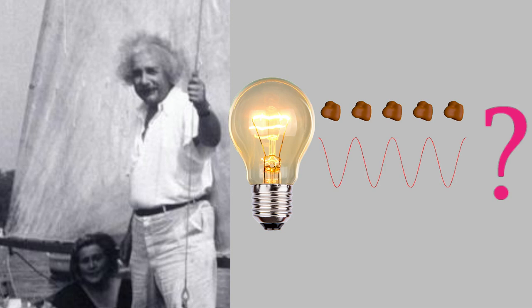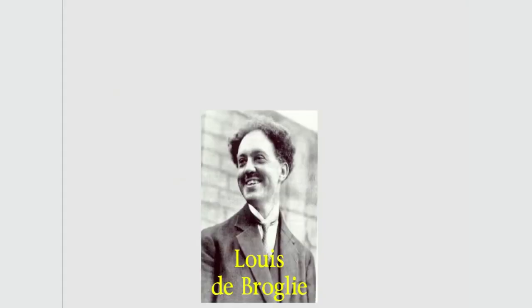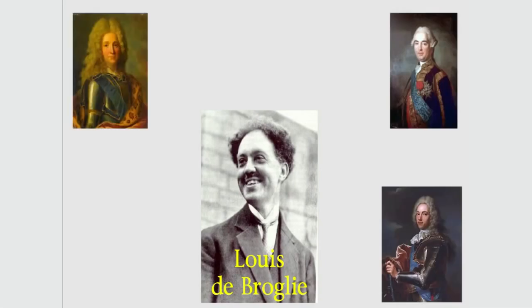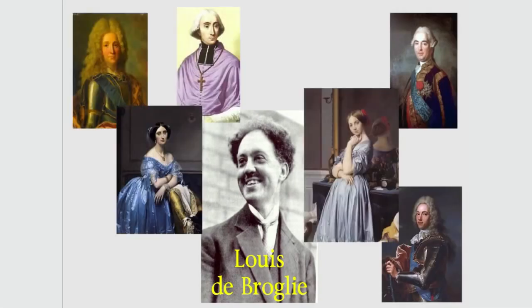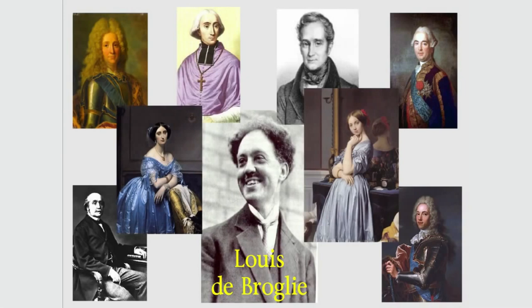The answer came in 1924 thanks to Louis de Broglie. The de Broglies were a very old aristocratic family. Louis himself was a duke, and his brother Maurice was also a physicist and a duke. The two of them had ancestors including other dukes and counts, princesses, countesses, a bishop, and two prime ministers of France.